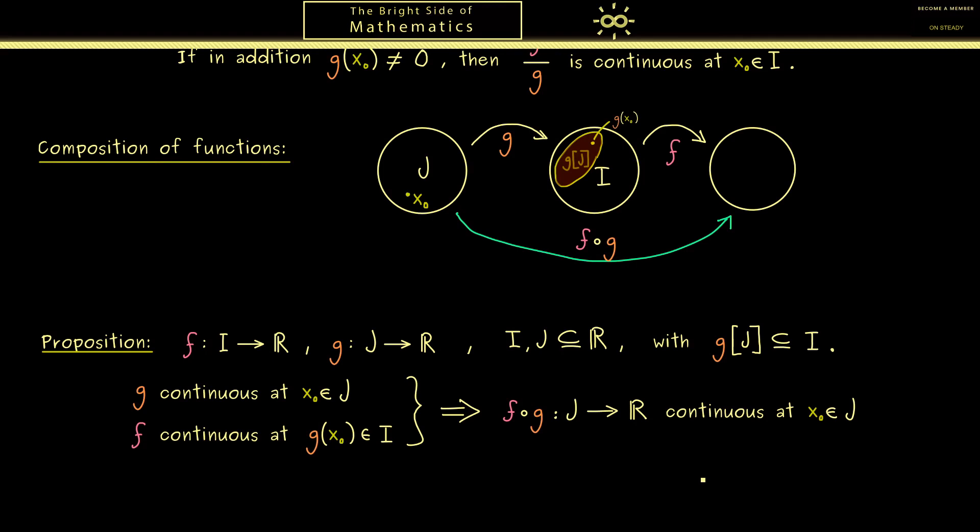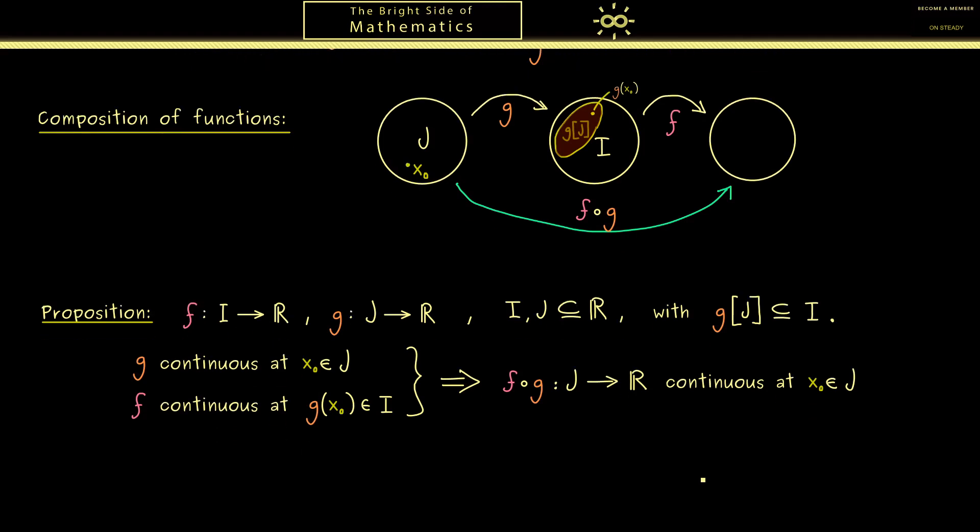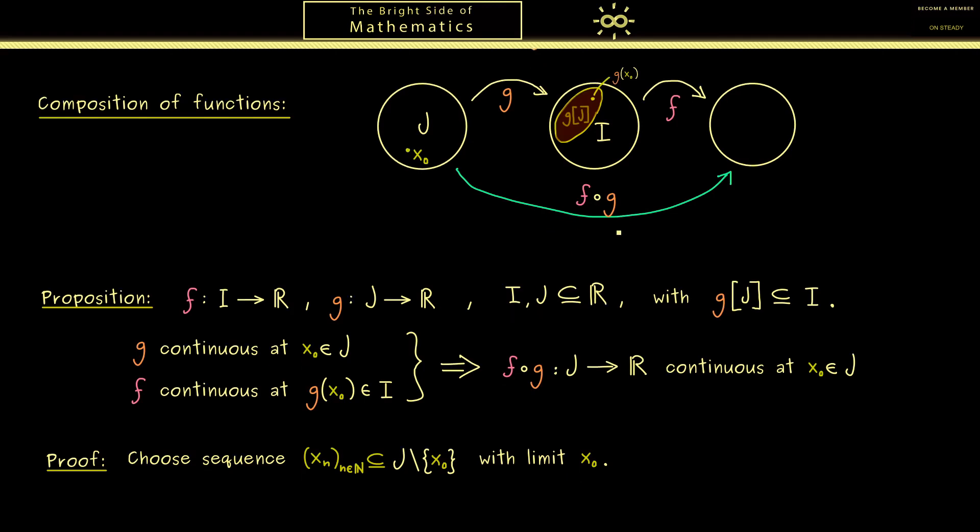Okay now I think it's helpful to write down a proof here. It's also not so hard but it's different from the ones above. Still I want to use the sequence definition of continuity here. Hence let's choose a sequence xn with members from J and limit x0.